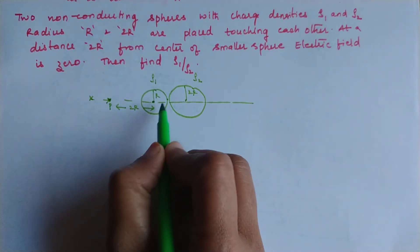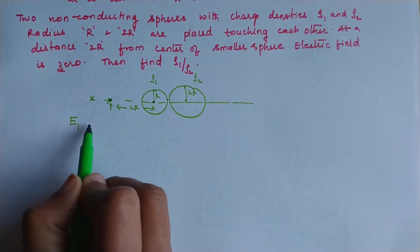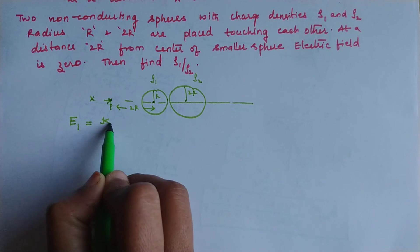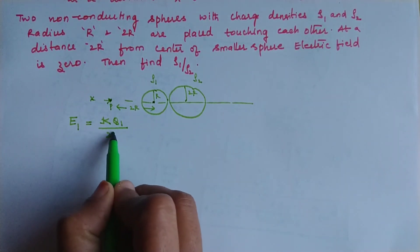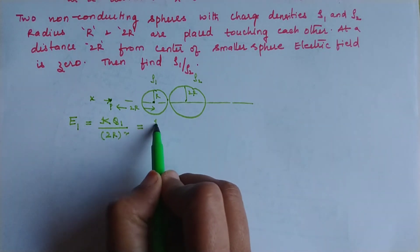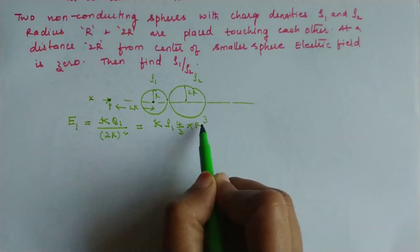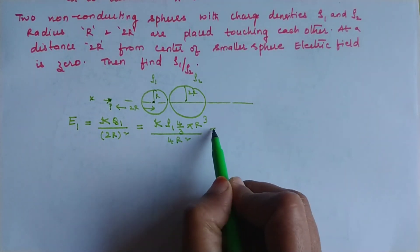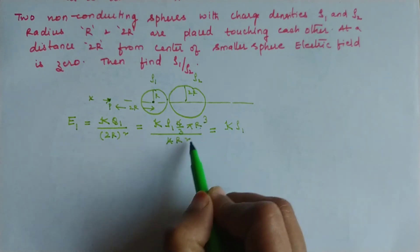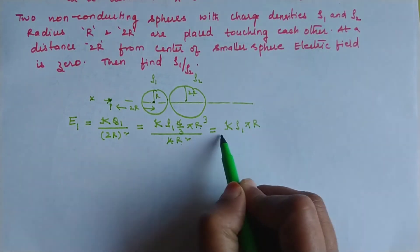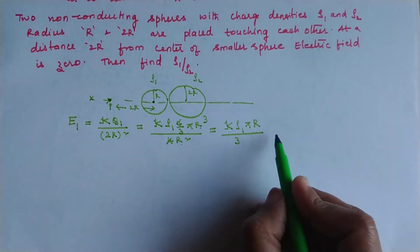Since the point is outside both spheres, we treat each as a point charge. Field due to the first sphere (radius R, charge density rho₁): distance from its center to the point is 2R. E₁ = k × rho₁ × (4/3)πR³ / (2R)² = k × rho₁ × (4πR³/3) / (4R²) = k rho₁ πR / 3.